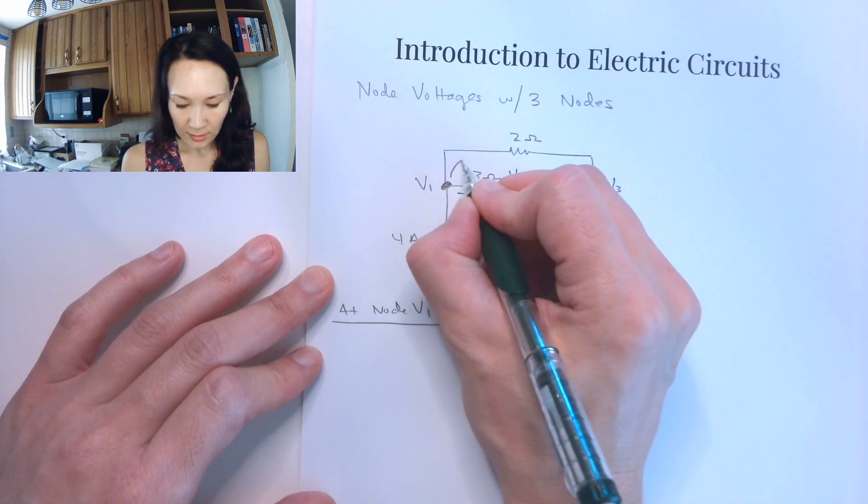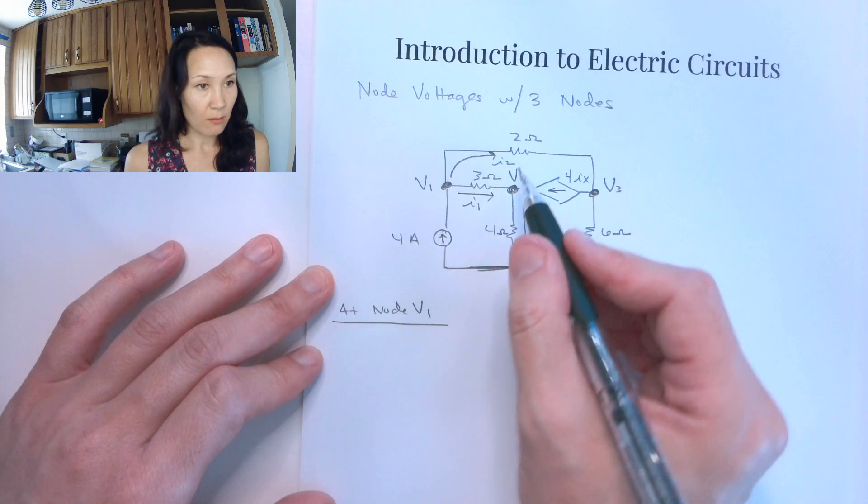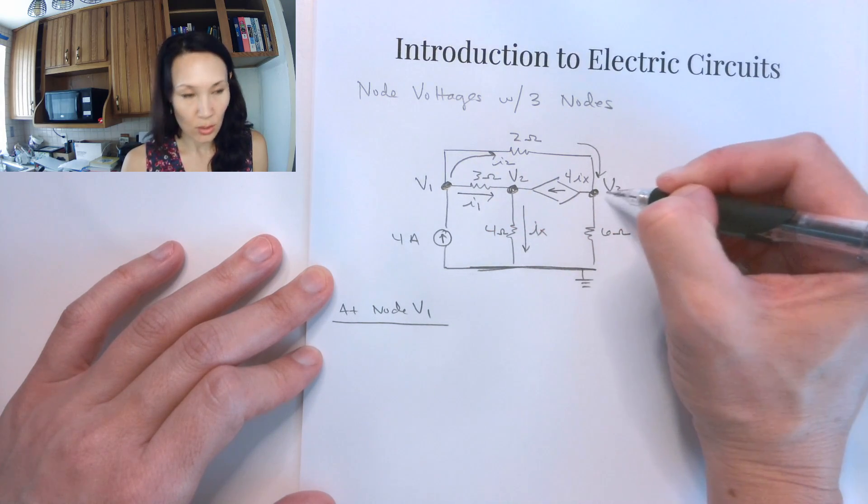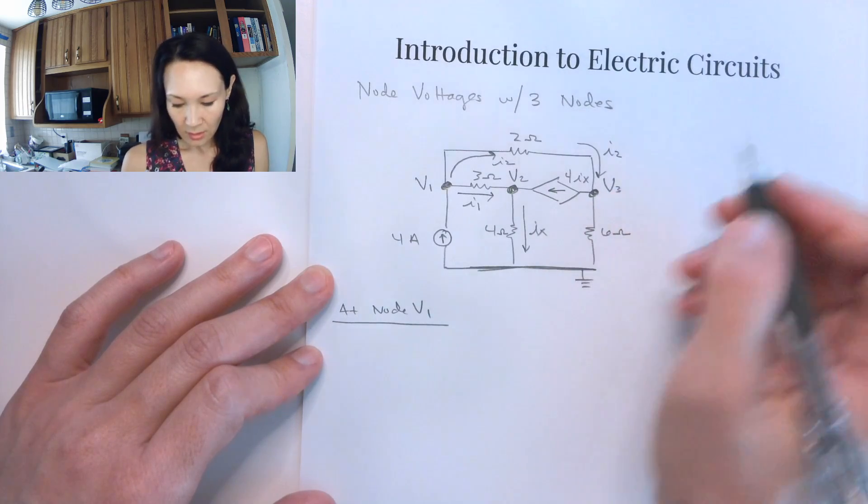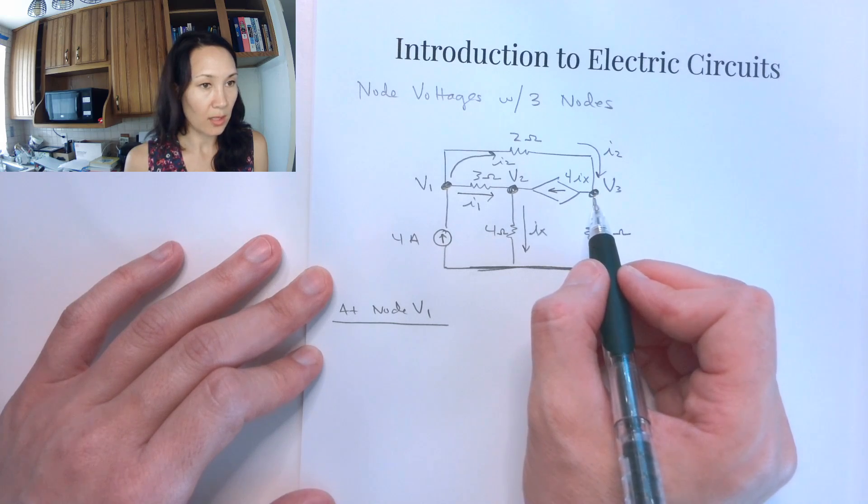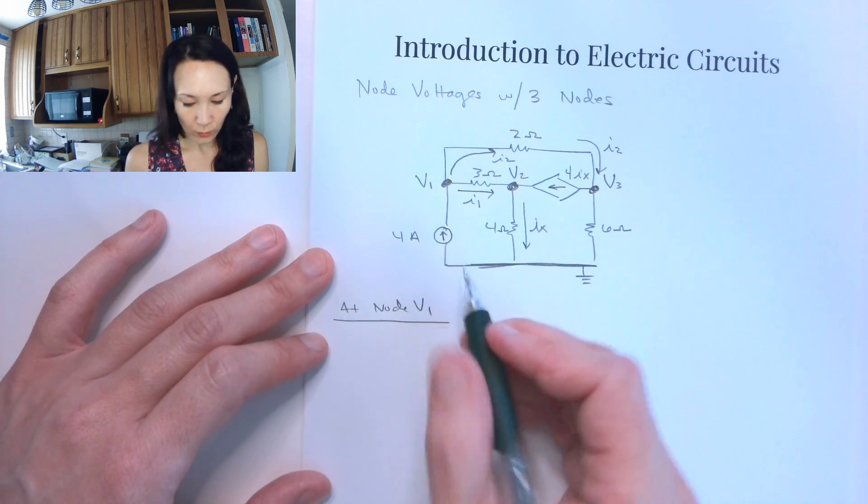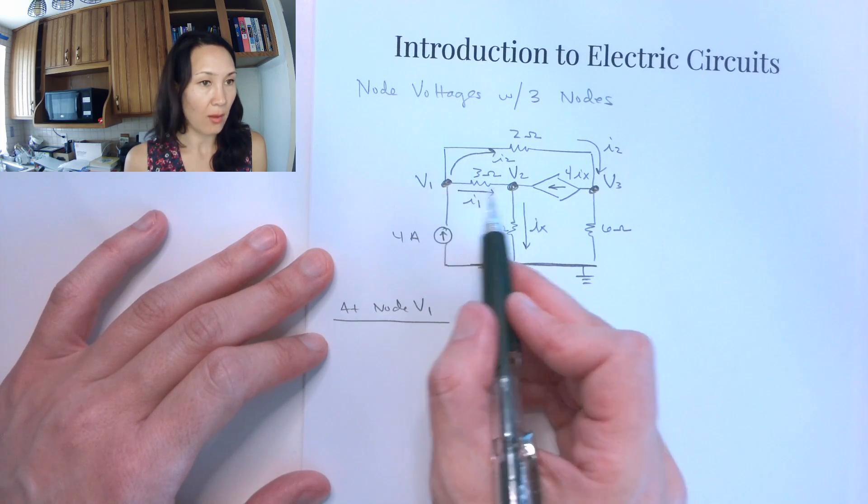We're going to have a current that takes this path through the 3 ohm resistor. So I'll label that I1. And then we've got current that's going to take this upper path here. I'll call this I2. The current is going to go through this resistor and then it's going to come back down into this node, V3. So just to help myself, I'm going to go ahead and remind myself that this is still current I2 when it comes in over here all the way on this side.